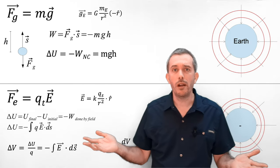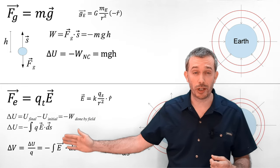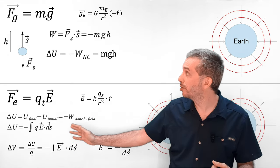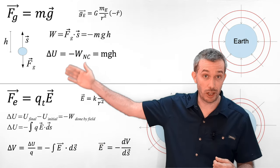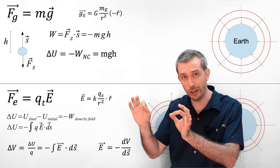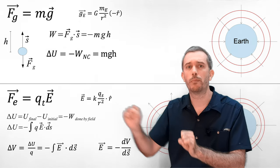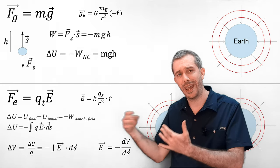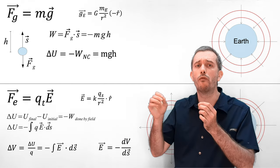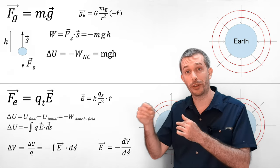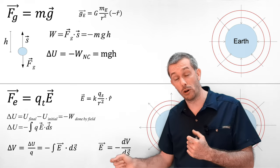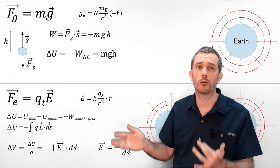As a quick summary, we introduced the change in electric potential energy, delta U, which is similar to the change in gravitational potential energy. And then we introduced the change in electric potential — without the energy part — which is actually electric potential energy per charge. So one volt of electric potential means you get one joule for each coulomb of charge that travels through this potential.